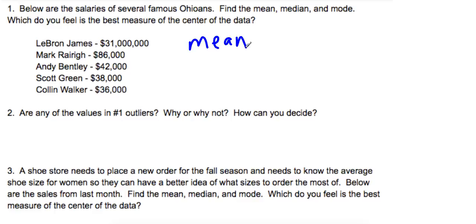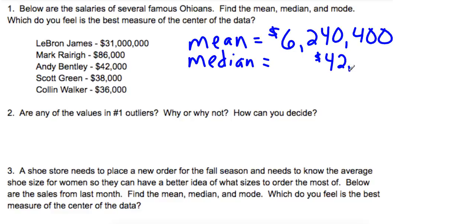I did. The mean turns out to be 6,240,400. Remember, that's where you just add them all up and divide by five. The median, that's the middle number, and I was so nice to put these in order. Mr. Bentley is the middle number, so 42,000.